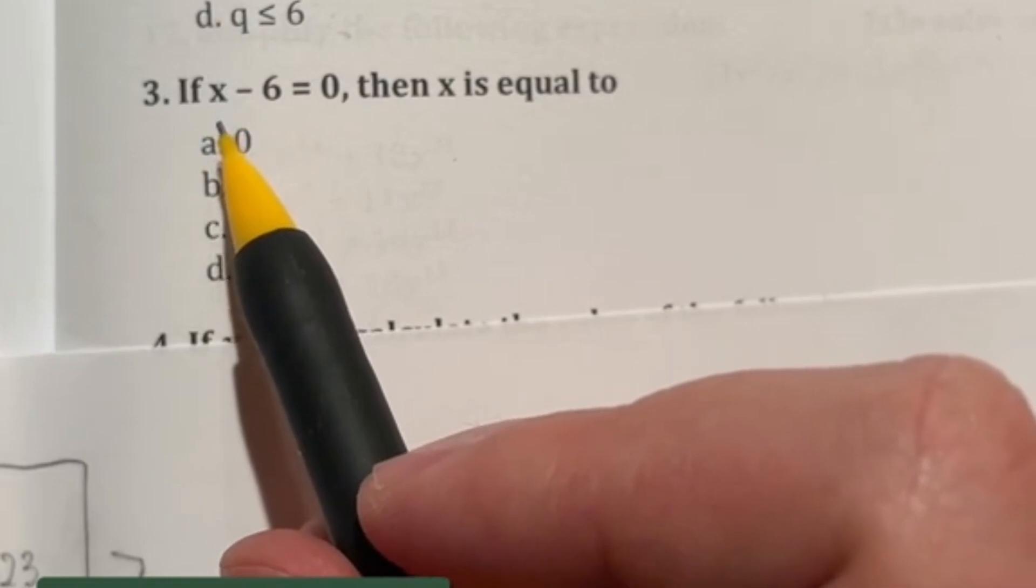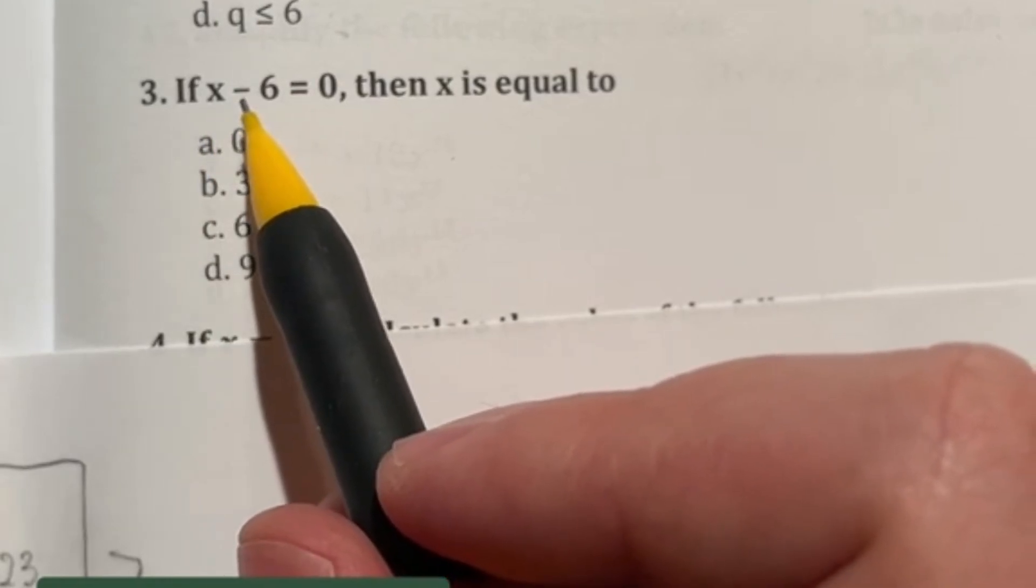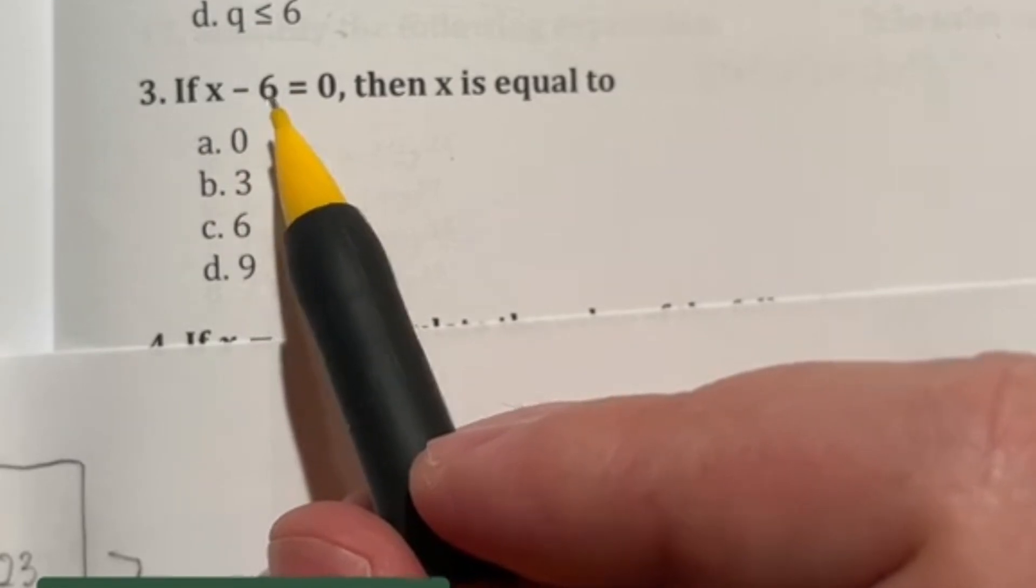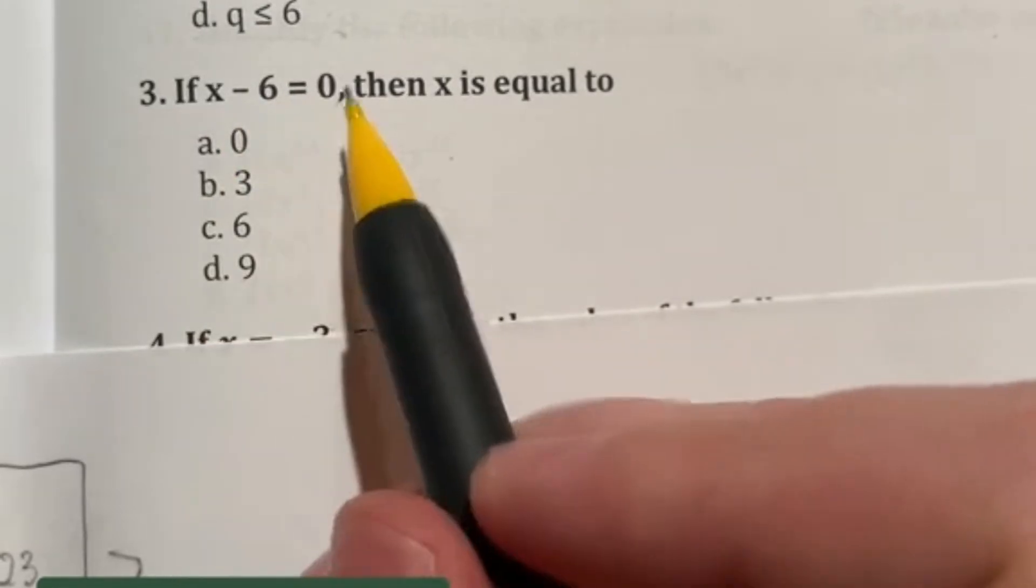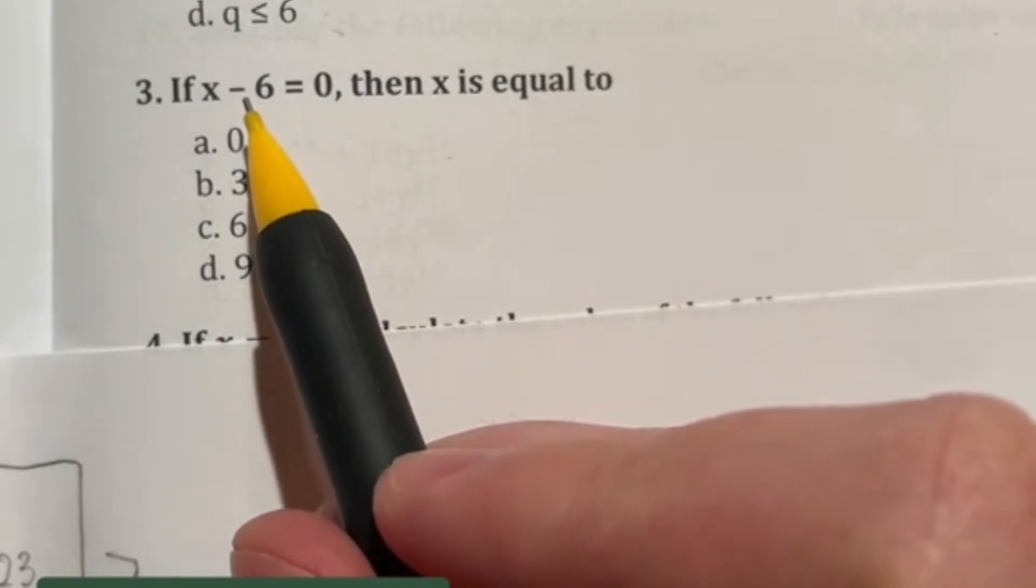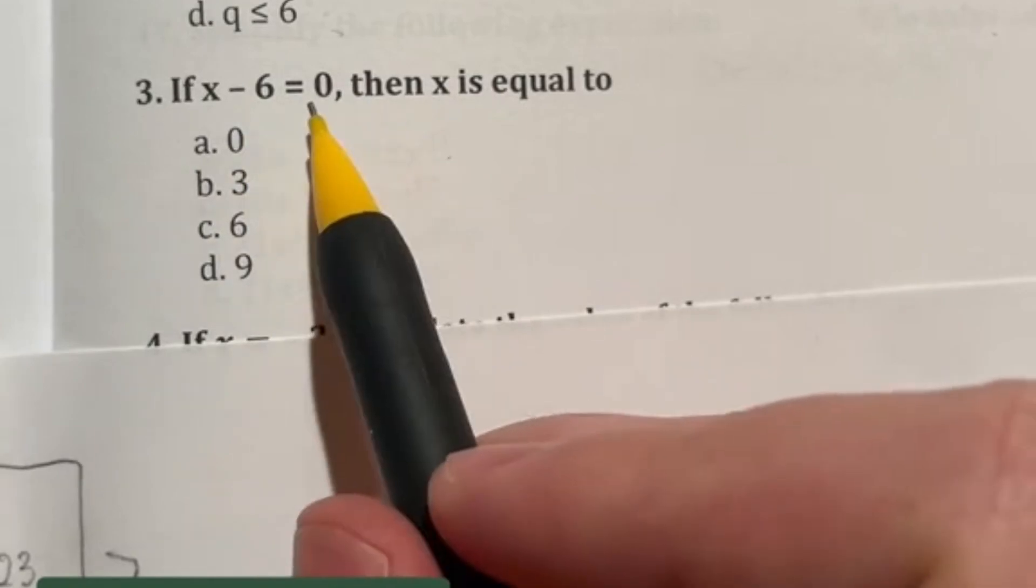So just remember, anytime you are dealing with this type of situation, you are just doing the opposite operation to get the x by itself. So in this case, we are subtracting, so the opposite would be adding, and anything you do to one side of the equation, you must do to the other side. So in this case, we're going to add 6 to both sides.